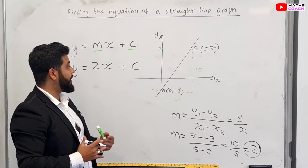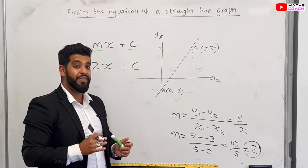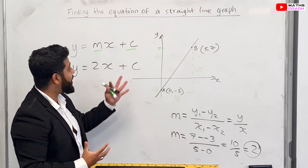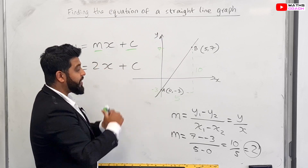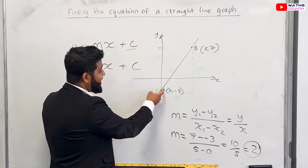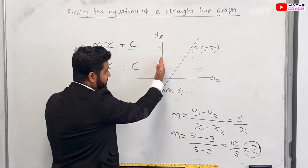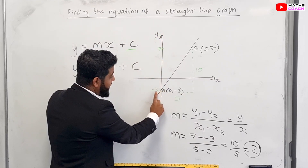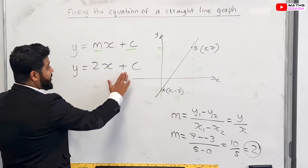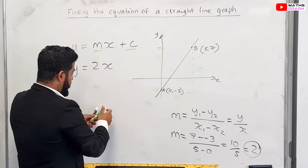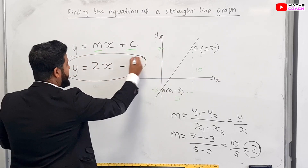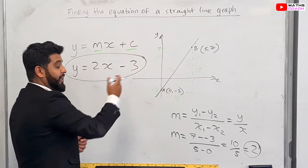All that leaves us to do now is find the value of c. On this particular question it's quite easy because you can see the line cuts the y-axis at minus 3. So we replace c with minus 3, and there we have it — the equation of this line is y = 2x − 3.